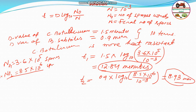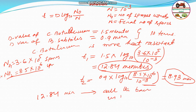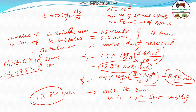If you heat the suspension for 12.84 minutes, then all bacteria will have a survival probability of 10^-3. B. subtilis will die before C. botulinum. Therefore, 12.84 minutes is the answer. Note that the temperature is constant at 121.1°C for all cases, so no additional temperature calculation is needed. Hope you understand this problem — please like and subscribe to my channel.